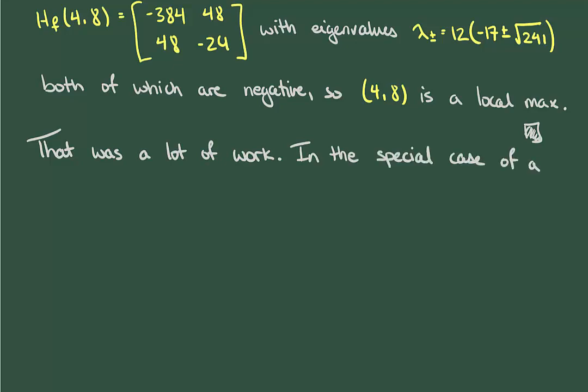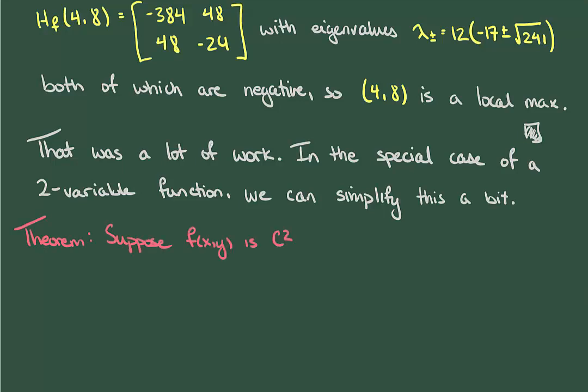However, in the very special case that our function is one of two variables, we can simplify our second derivative test. Writing this test as a theorem, suppose then that f is a C^2 function of two variables, and that c is a critical point. Let's let D be the determinant of the Hessian matrix, which we recall is sometimes just called the Hessian. If D is negative, then c is a saddle point.